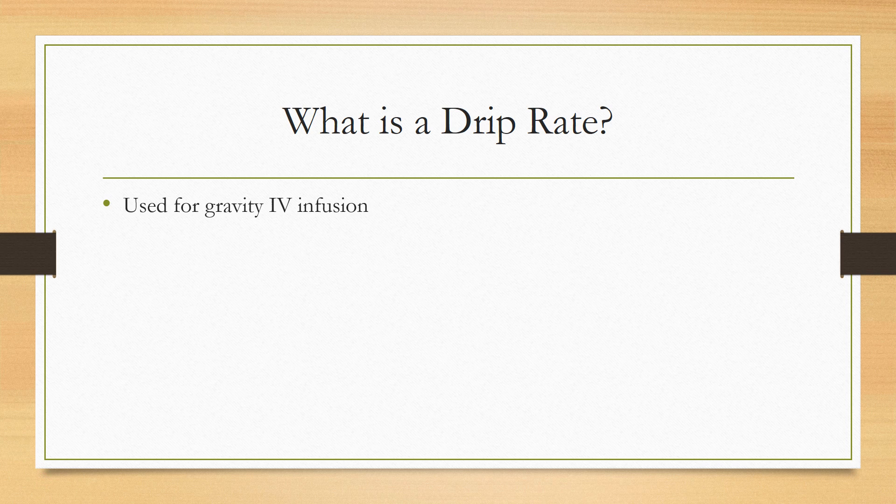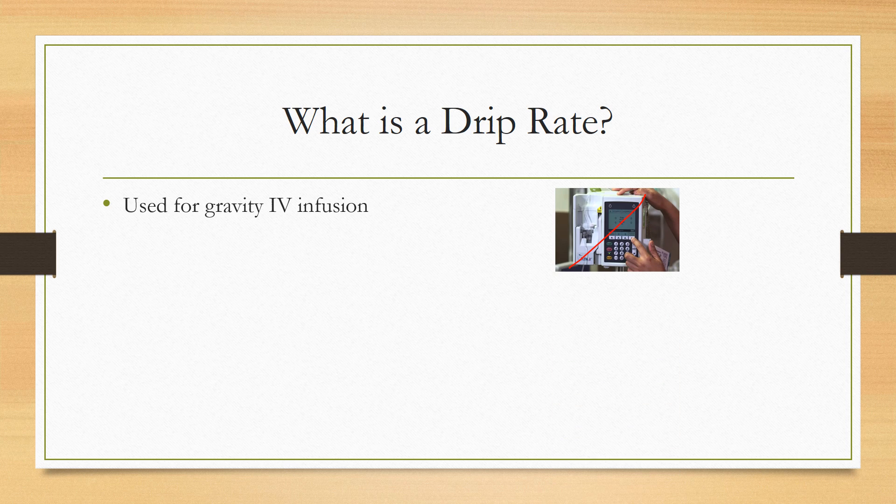So what is an IV drip rate to begin with? IV drip rates are used for gravity infusion. This is when you don't have an electric pump determining the rate at which your IV fluid flows into the patient.